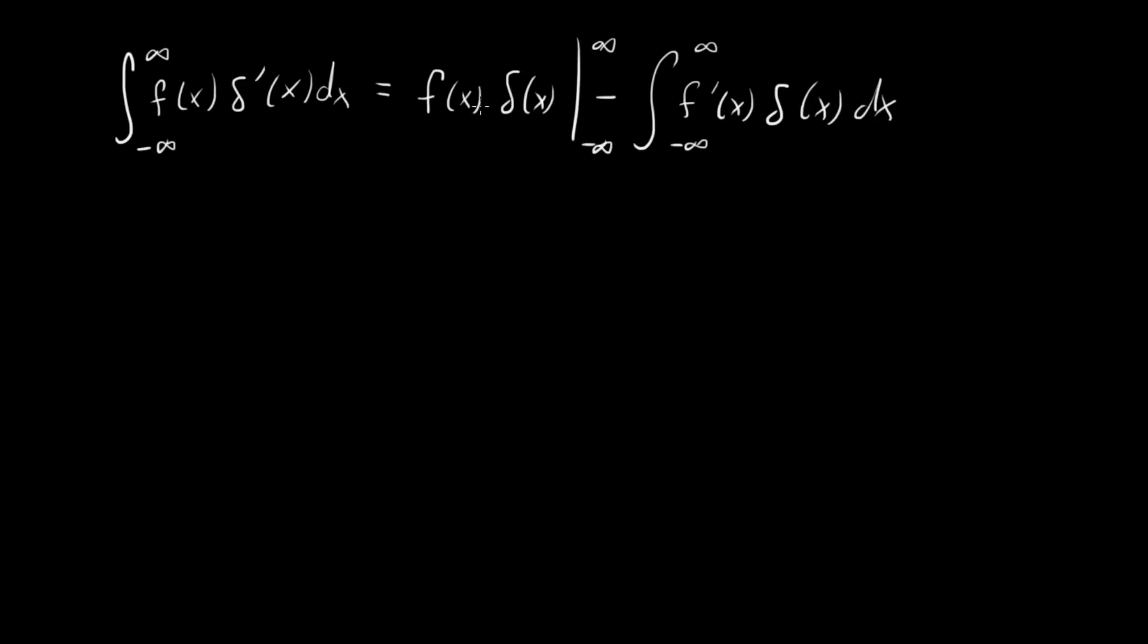So let's first look at this piece right in front. One thing to notice is that delta of x is equal to zero at infinity and minus infinity. This whole thing right here is just going to be f of infinity times zero minus f of minus infinity times zero. So this whole quantity right here goes to zero. And so we're left with just this piece right here, this integral minus infinity to infinity, f prime of x delta of x dx.